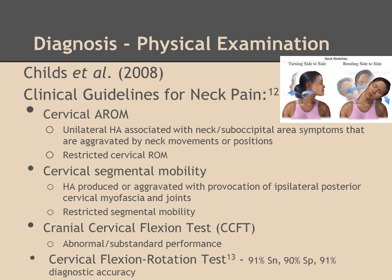In Child's guideline for neck pain, he notes deficits in cervical range of motion, segmental mobility in the cervical region, and deep neck flexor weakness. Ogans and Hall tested the diagnostic validity of the cervical flexion rotation test in the atlantoaxial joint and found 91% sensitivity, 90% specificity, with a diagnostic accuracy of 91%.